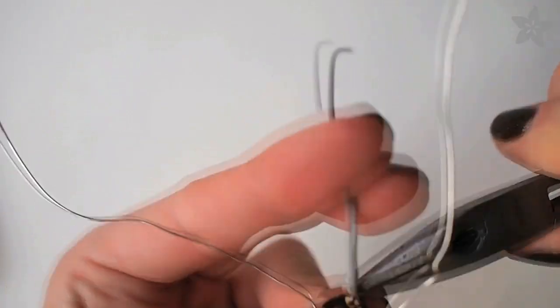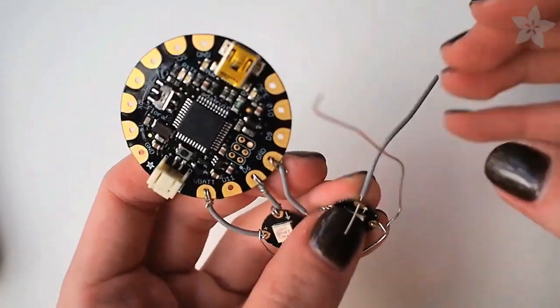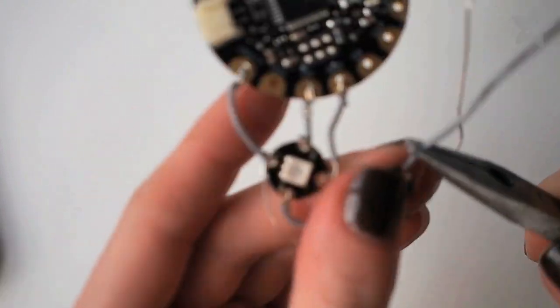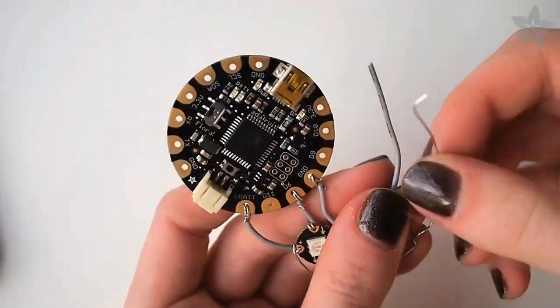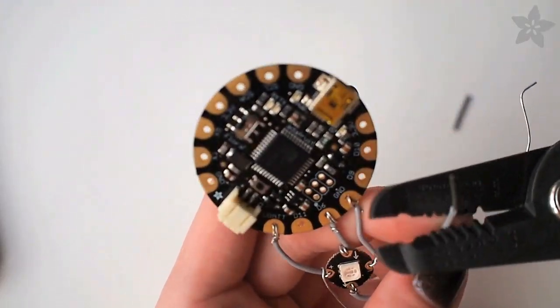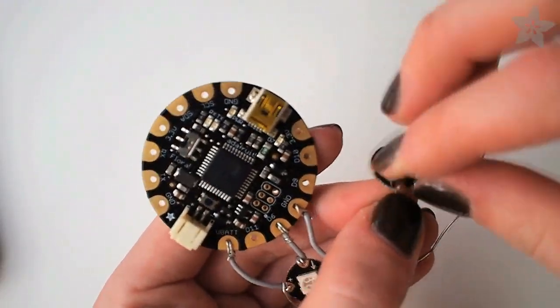To add a second pixel to your chain use a new wire to connect to the outward pointing arrow on the previous pixel. This will connect to the inward pointing arrow on the next pixel and so forth. As before connect the power and ground wires to this new pixel. Repeat this process for as many pixels as you'd like in your design.